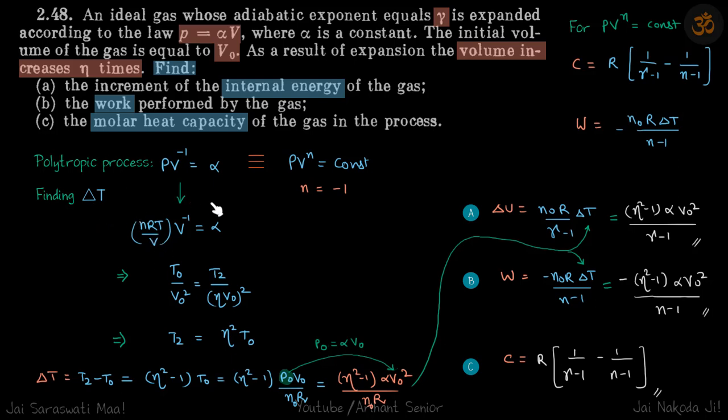Pressure will look like this, and then using initial and final conditions, we'll get the final temperature as eta squared times initial, which gives delta t as t final minus t naught, which becomes this.